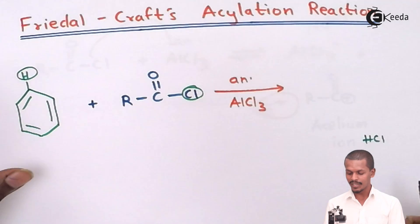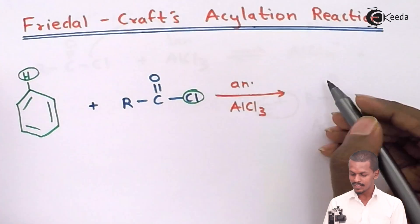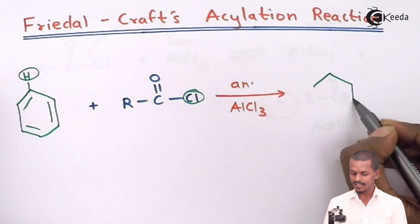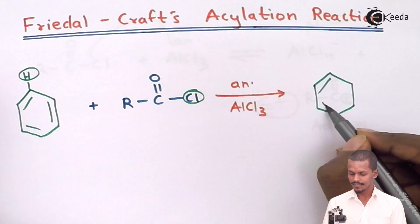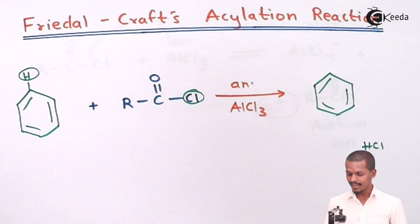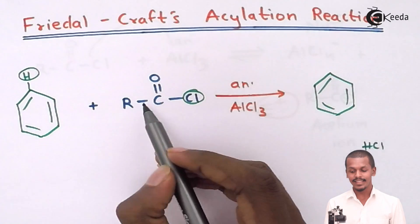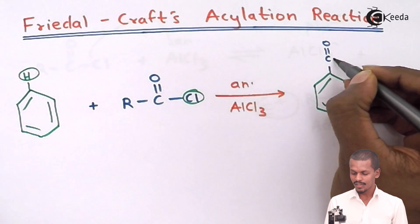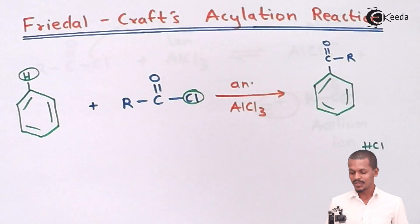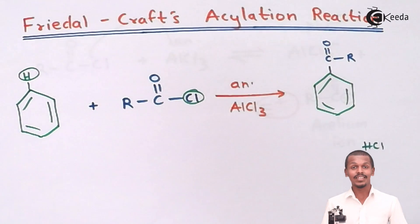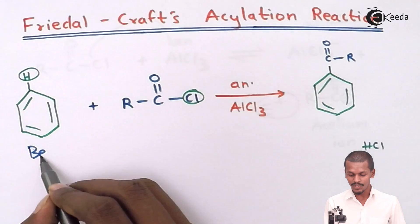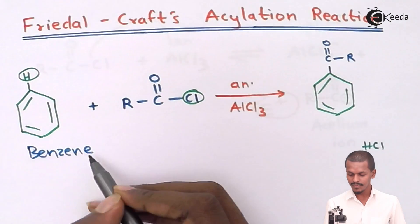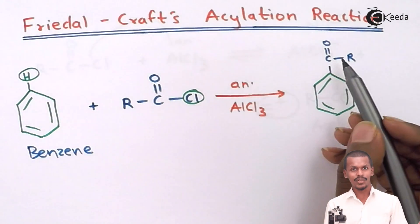The hydrogen is removed along with Cl to form HCl. What remains is a benzene ring with a C=O and R group attached, making the benzene converted into a ketonic group.